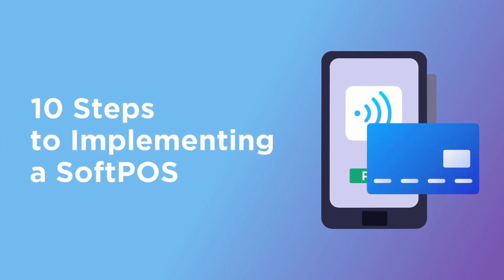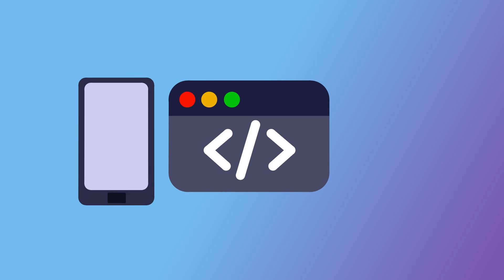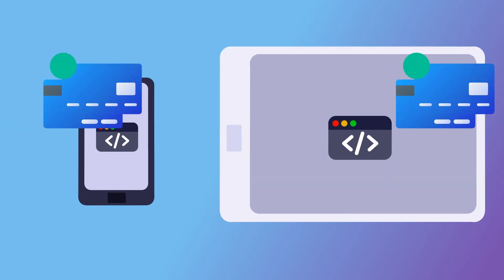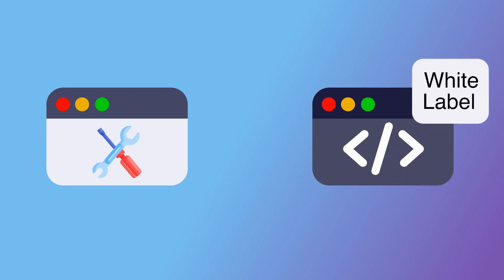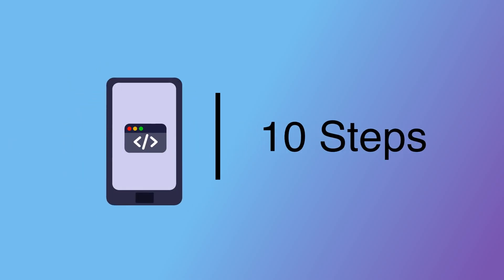10 Steps to Implementing a SoftBoss. SoftBoss is an app that helps turn your phone or tablet into a terminal without purchasing additional hardware. You can either build such an innovative system from scratch or use a white-label offering. If you're looking to have your own SoftBoss solution, here are the 10 critical steps you'll need to take to succeed in this process.